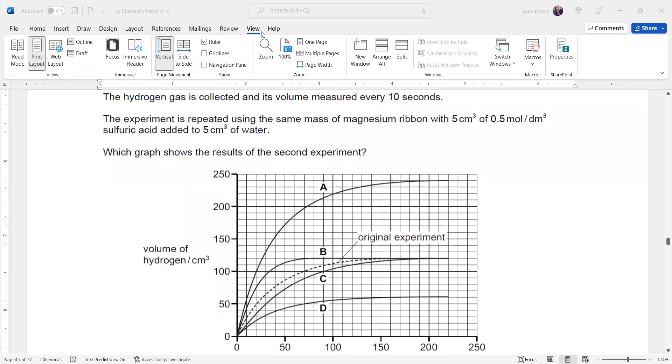The amount of product will also decrease. If this was the original line, then the rate of the reaction will decrease as well as the final amount of the product should also decrease.